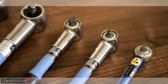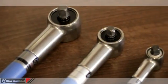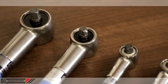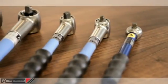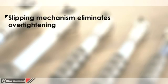In this video we will look at the TSP and TSN slipping torque wrenches. The TSP and TSN ranges feature a unique slipping mechanism to eliminate overtightening.